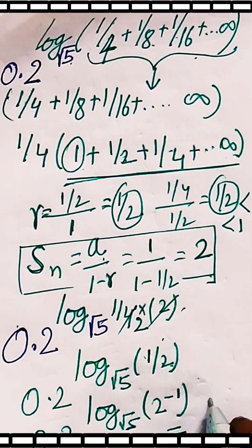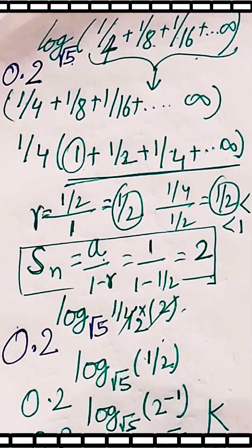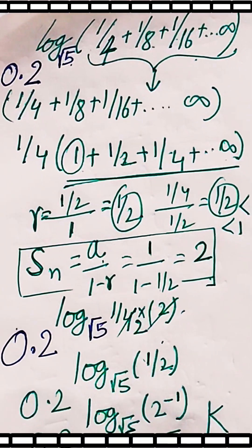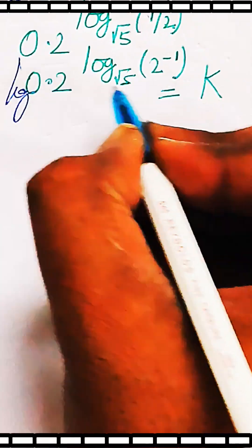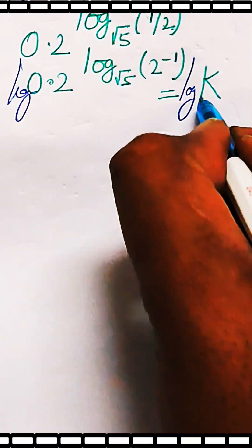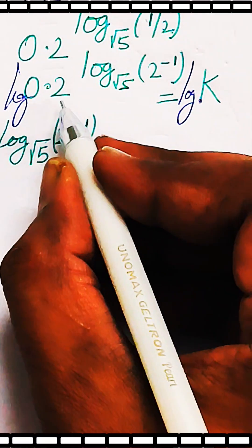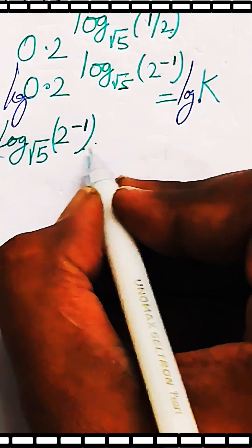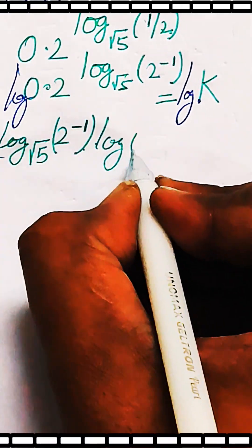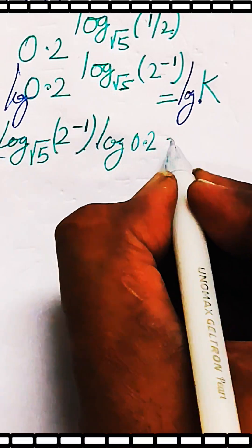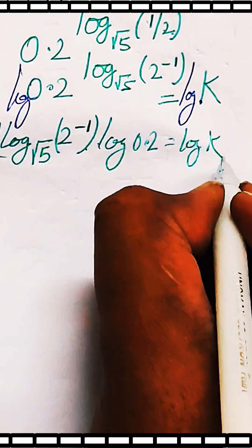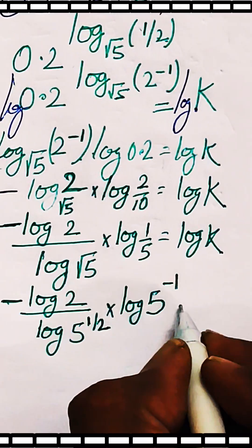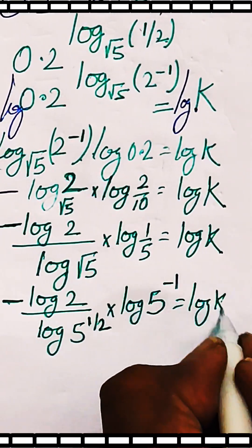Let us assume this equals k and take log of both sides. Since log of x power m is m log x, this exponent will come as a prefix to the log of 0.2. We have log k on the right-hand side, which can be further simplified.